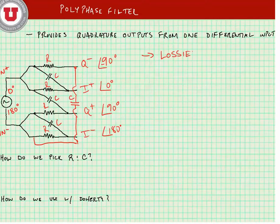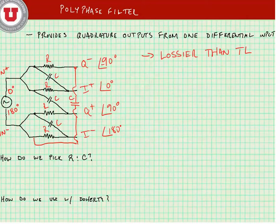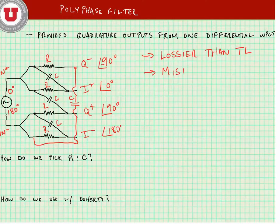Now one problem that this has is that it's lossier than a transmission line. Another issue that's going to be seen is that mismatch between the R's and C's will cause phase errors.